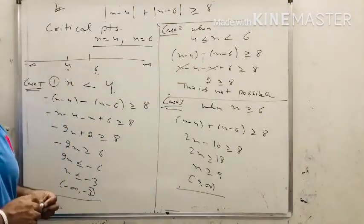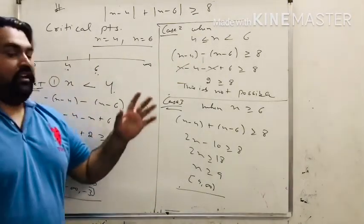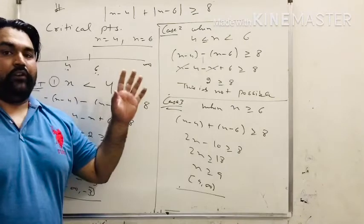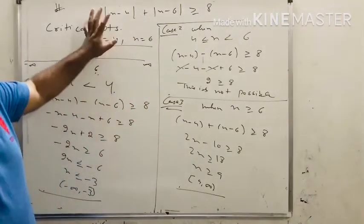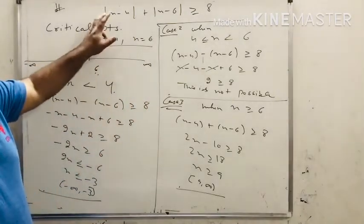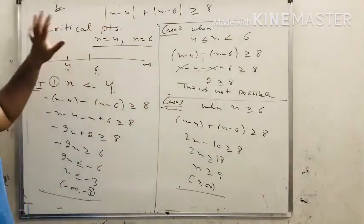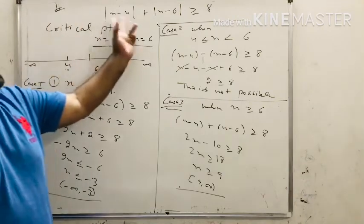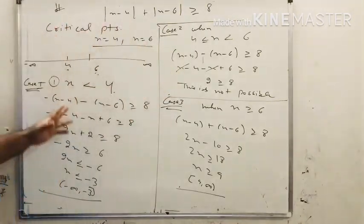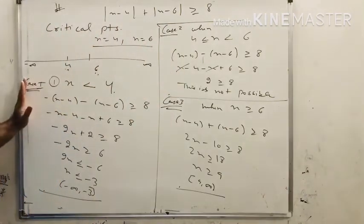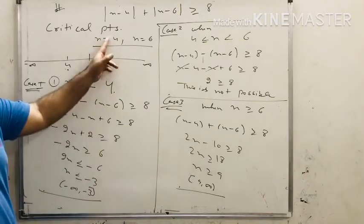To recall this concept: whenever you encounter this kind of question with two modulus expressions, divide the equation into three cases. First, find the critical points, then draw a number line and evaluate each region.